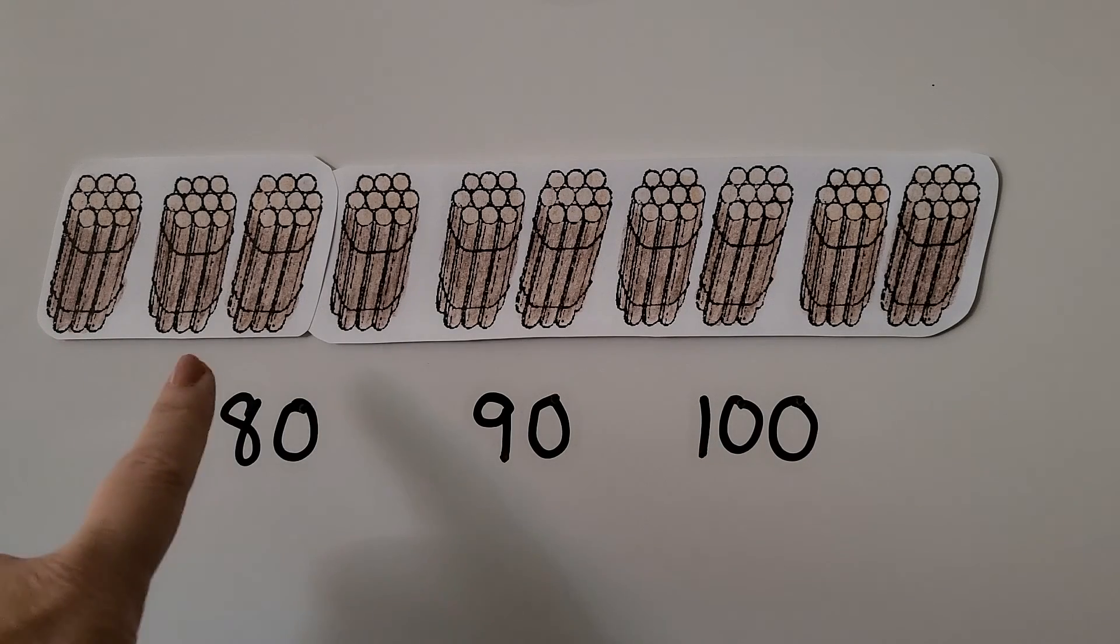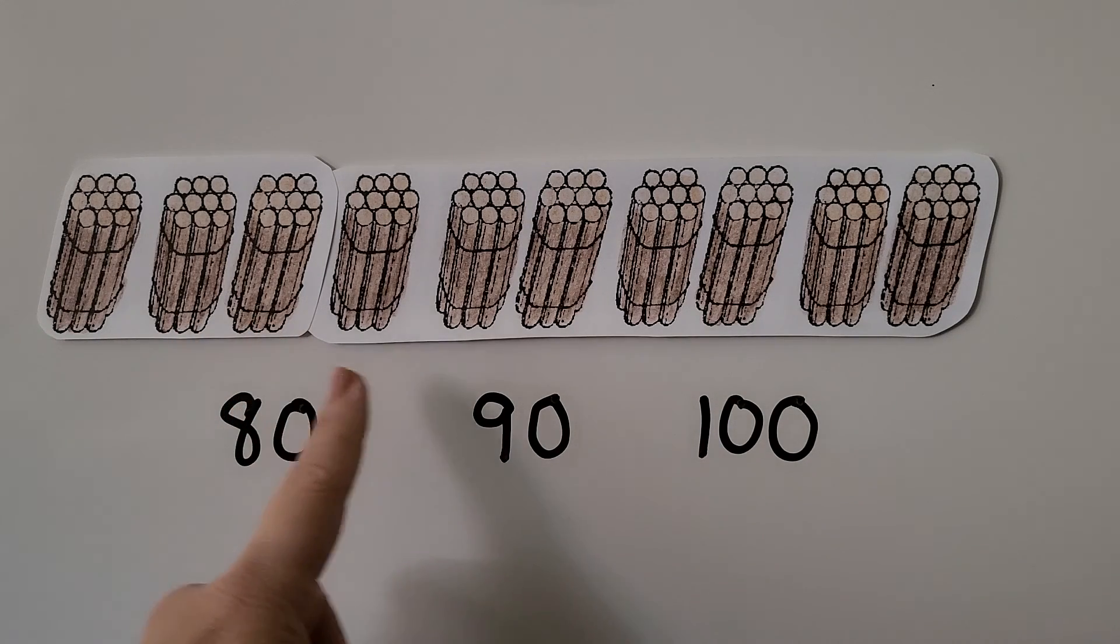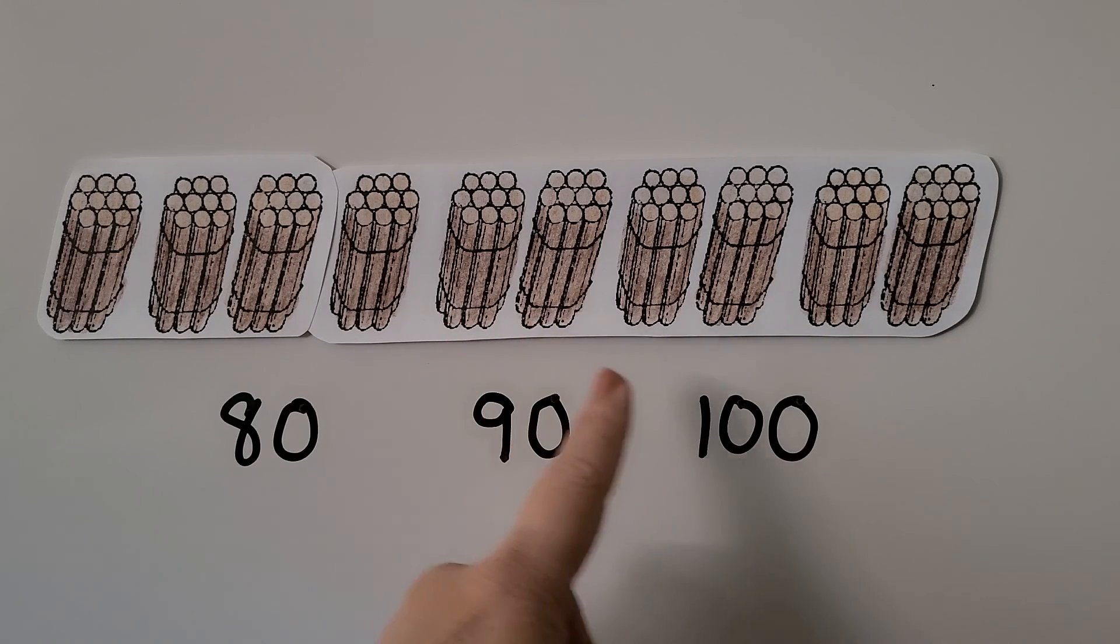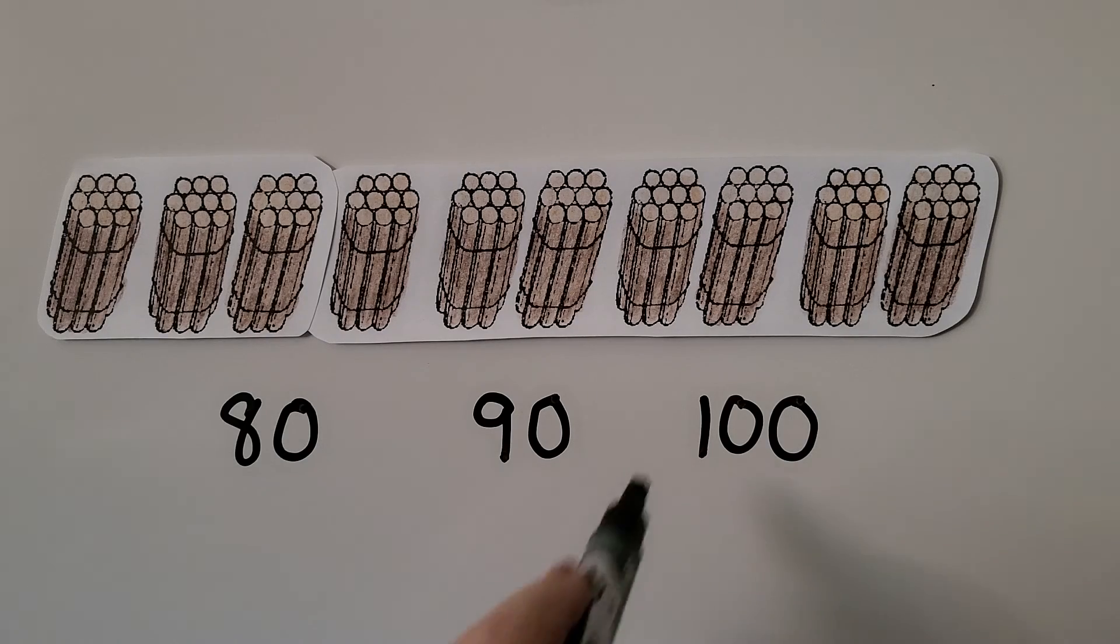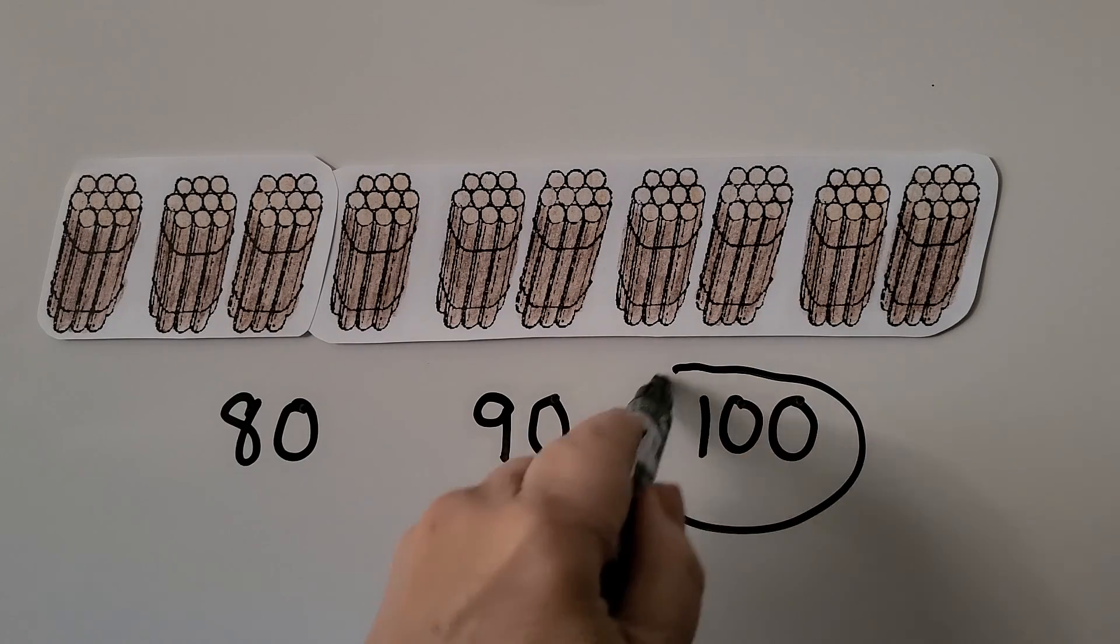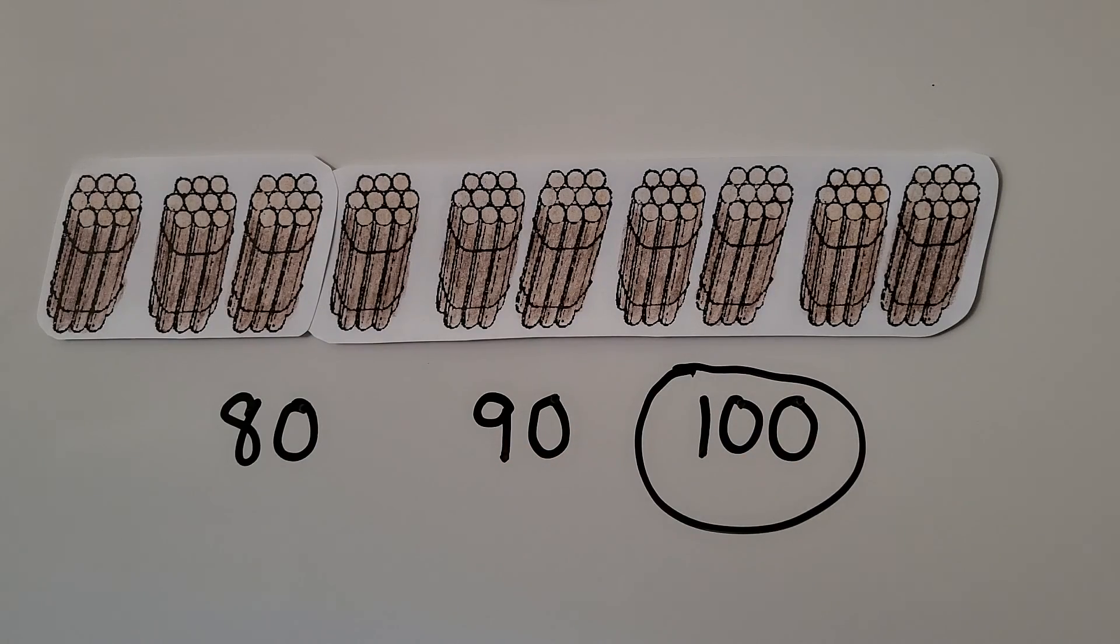10, 20, 30, 40, 50, 60, 70, 80, 90, 100. We need to circle the number that shows how many. It's 100. 10 sets of 10 sticks is 100 sticks.